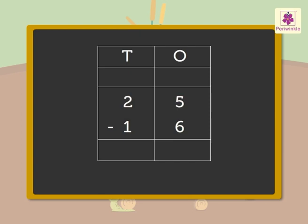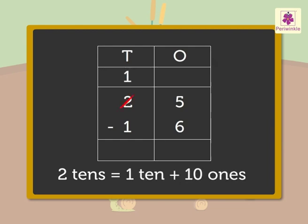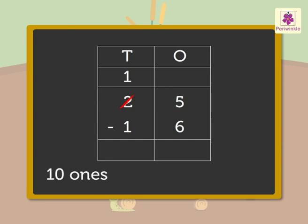So, first we have to regroup the 2 10s as 5 is less than 6. So, we get 2 10s is equal to 1 10 plus 10 1s. We add the 10 1s and the 5 1s to get 15 1s.